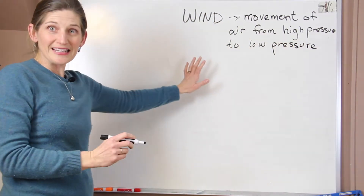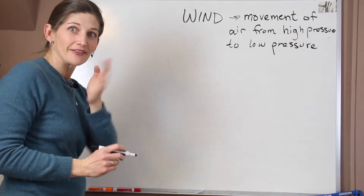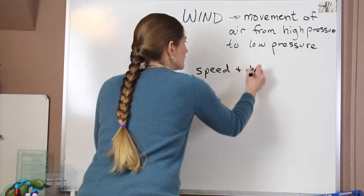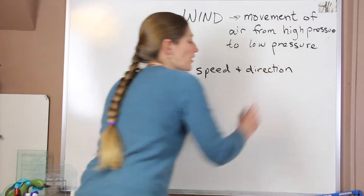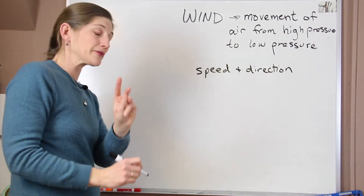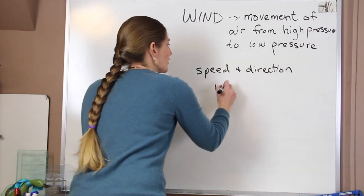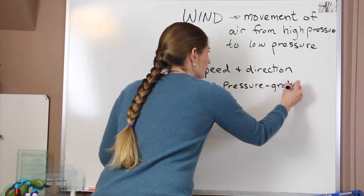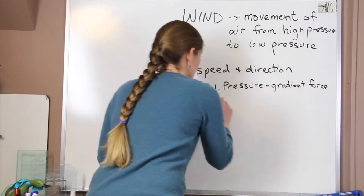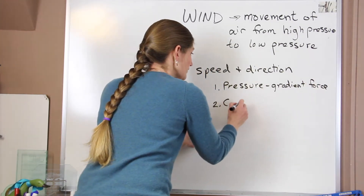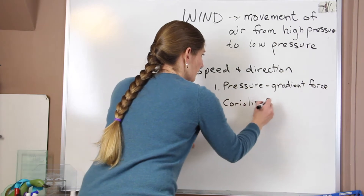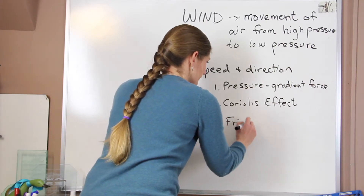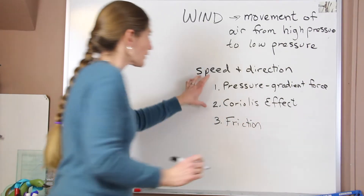The speed that the wind is moving — how fast it's going and the direction it goes — speed and direction are caused by three things, and we're going to talk about those three things in turn. The first is the pressure gradient force, the second is the Coriolis effect, and the third is friction.